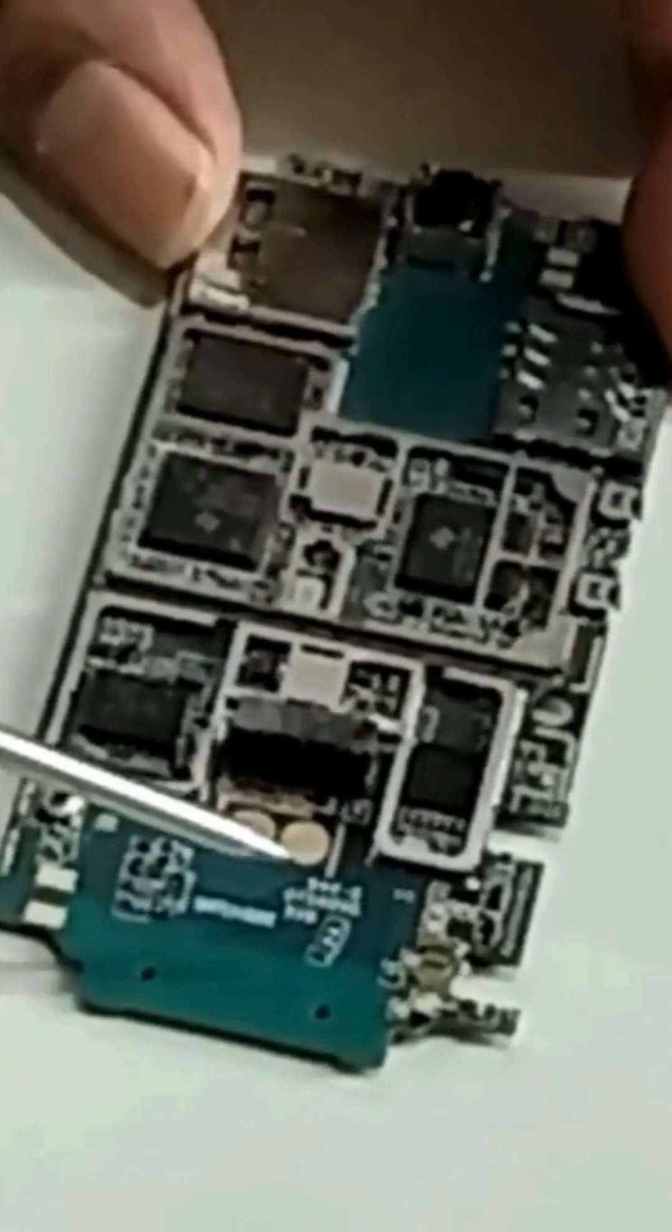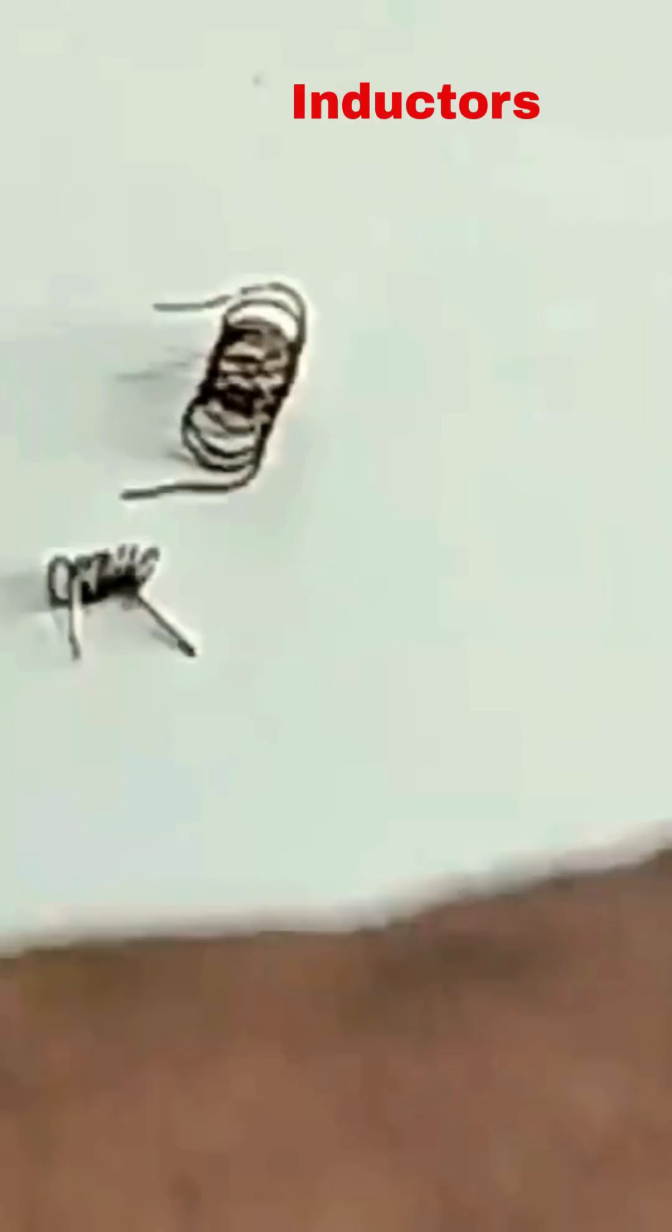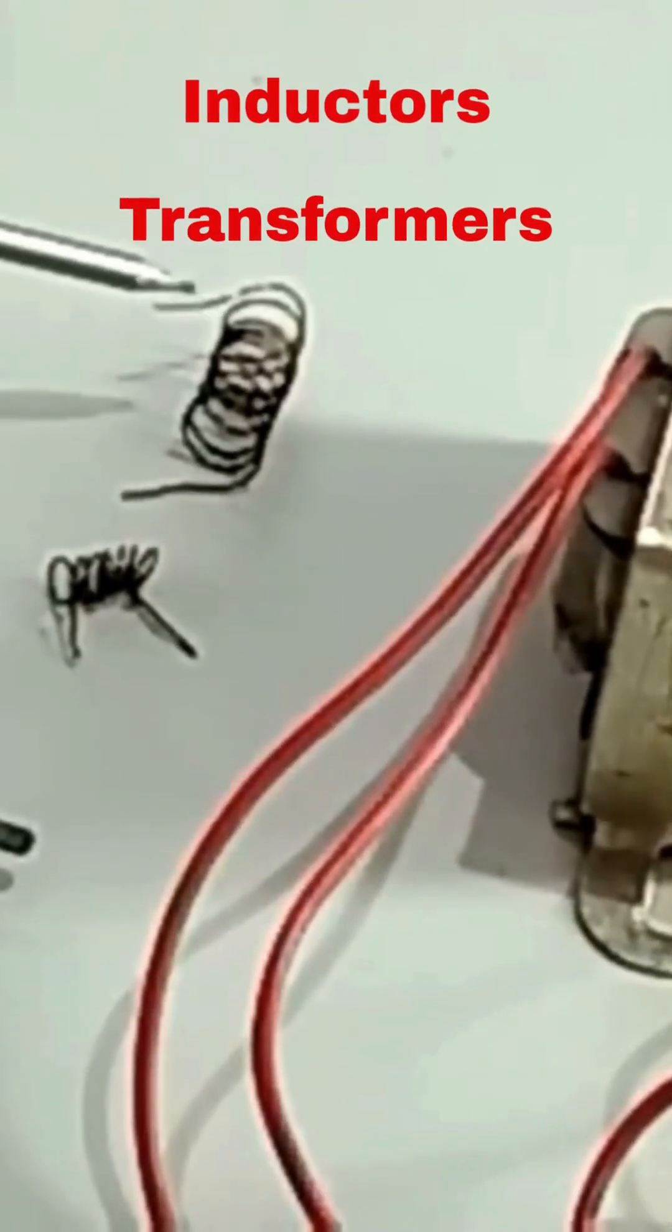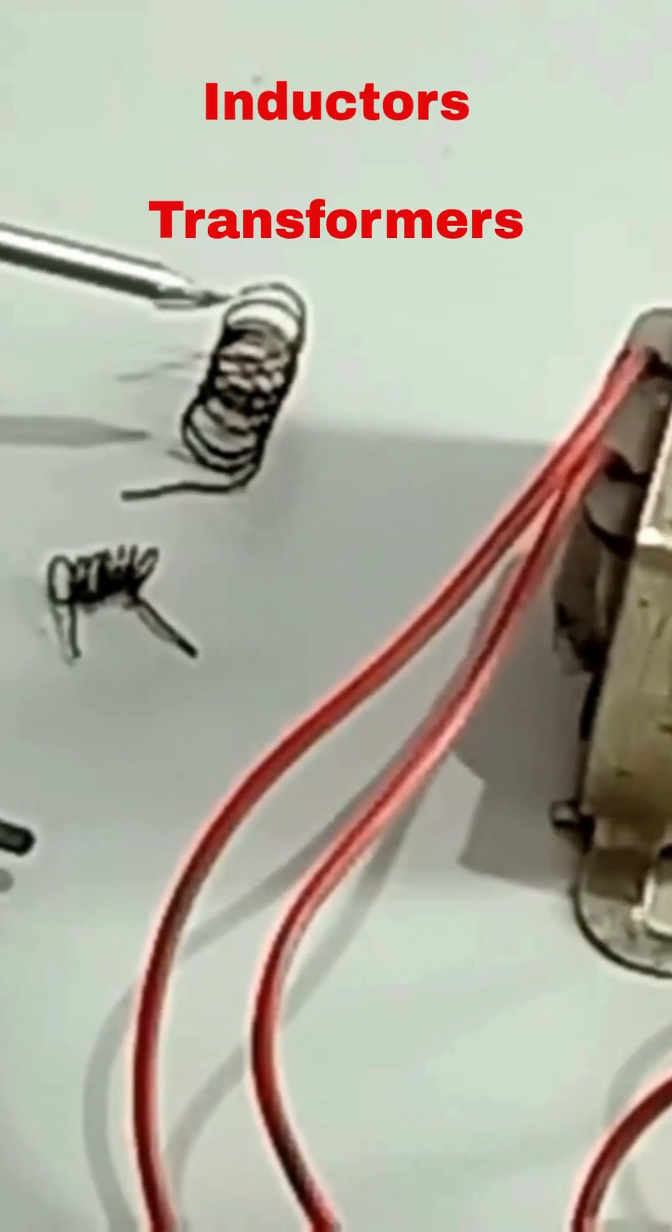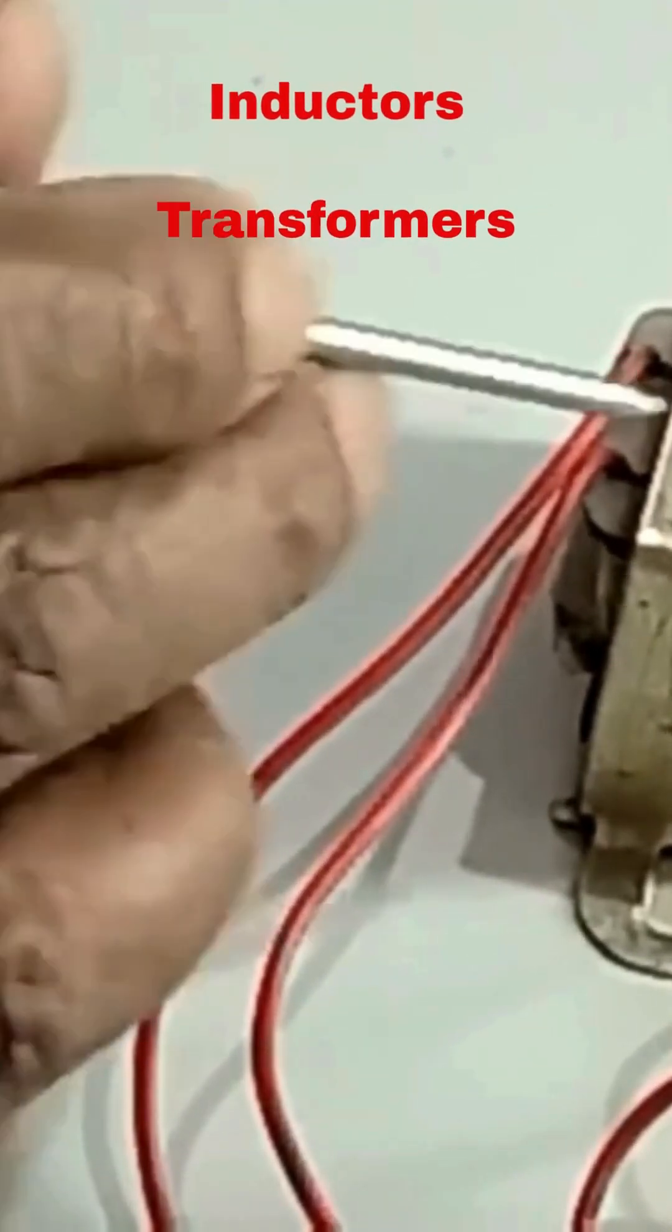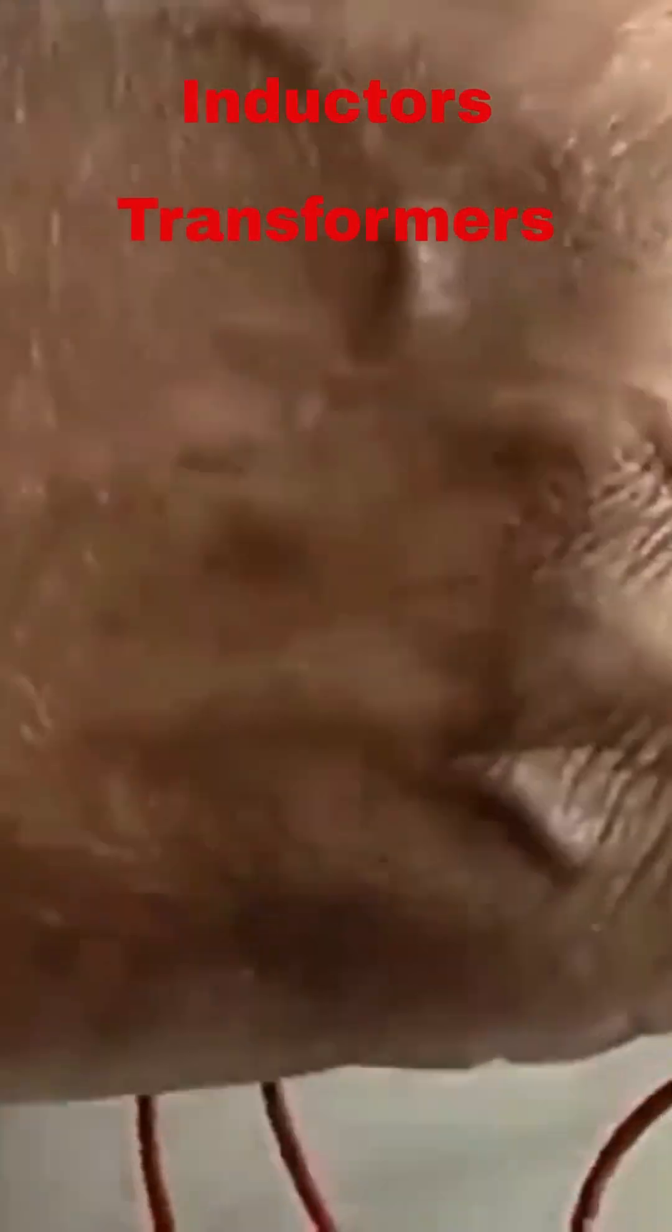These are what we call SMD capacitors, and here are inductors as well as transformers. These are the transformers. Inductors have copper wire, and transformers also have copper wire inside them.